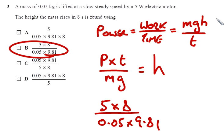Work will be the potential energy gained by the object. Rearranging for H, you get power times time over mg, which is going to be 5 times 8 over 0.05 times 9.81. And that will be B.